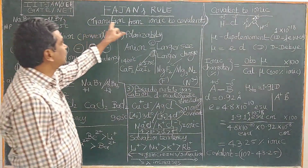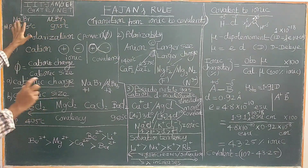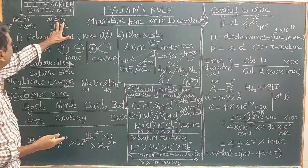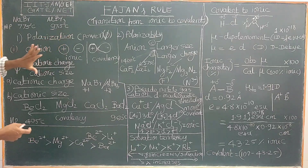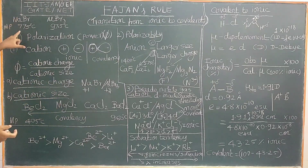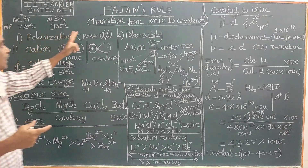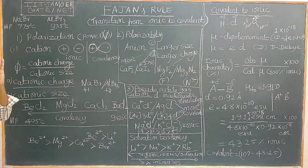Fajan's rule deals with the transition from ionic to covalent. For example, sodium bromide and aluminium bromide are ionic compounds, formed by complete transfer of electrons. However, if you look at the melting point, sodium bromide has a high melting point of 775°C, whereas aluminium bromide has only 97.5°C. This very low melting point indicates a transition from ionic to covalent — aluminium bromide is largely covalent, although it is considered an ionic compound.